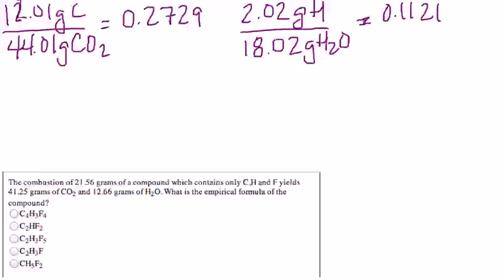and fluorine and yields 41.25 grams of carbon dioxide and 12.66 grams of water. And we're supposed to figure out the empirical formula of the compound.